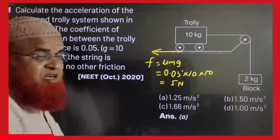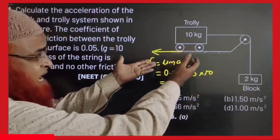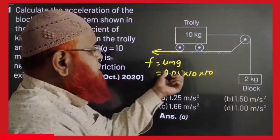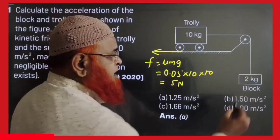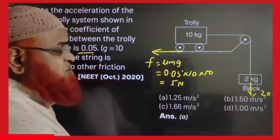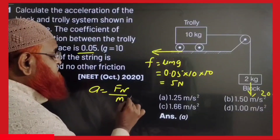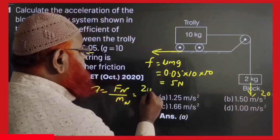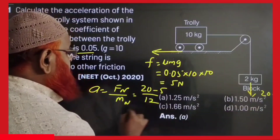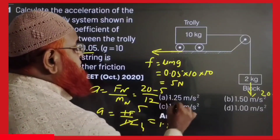This is a previous year NEET question from 2020 asking us to find the acceleration of a trolley. The trolley has a friction force because the coefficient of friction is given as 0.05, so friction force is μmg which is 5 newtons. The weight 2kg means 20 newtons acting downwards. Acceleration is net force by net mass; the dominating force is 20, friction is 5, so the net force difference gives 15, divided by net mass 12. Acceleration is 15/12 = 1.25 m/s².